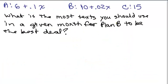Let's figure out the most texts you should use in a given month for Plan B to be the best deal. We know it's going to be over 50, because under 50, you would use Plan A. So what we're really at this point doing is comparing Plan B and C. We want Plan B to be cheaper. So the cost for Plan B is 10 plus 0.02x, and we want that to be cheaper than the $15 plan. So we can subtract 10 from both sides.